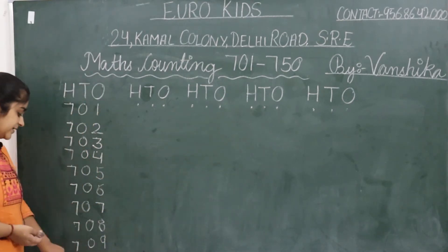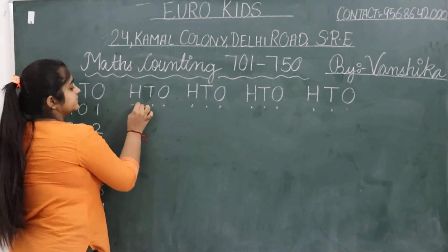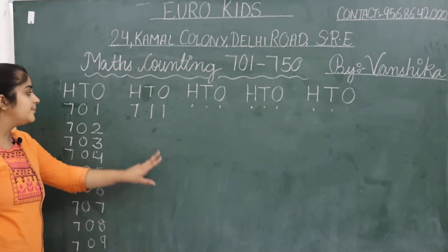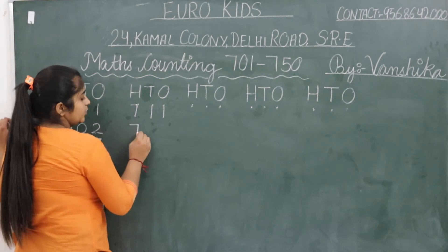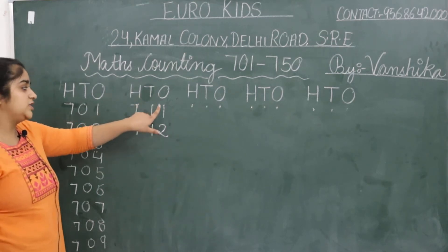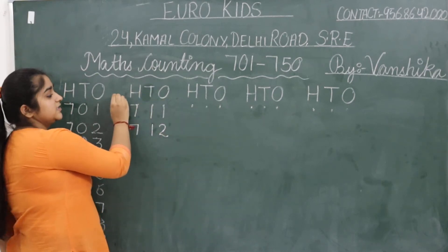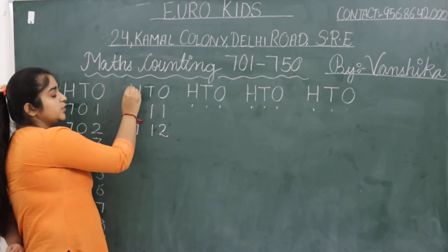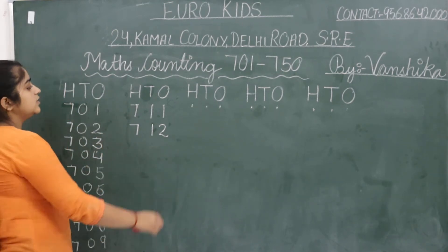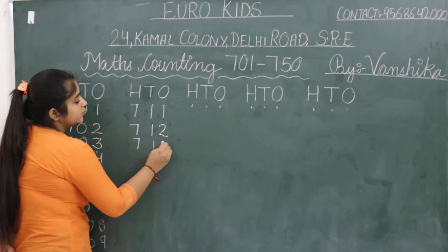Have you all understood? Now what do we write next, children? Your 7 stays as it is, and after 10 what comes? 11. Don't get confused — your 7 stays as it is and after 10 comes 11. Next is 712. You have to see the digit under H, the digit under T, and the digit under O. Do you know what the full form of HTO is? We look at values from right to left: 1, 10, 100. Since counting has gone past 100, you have to write under those columns. Write full block letters touching the line.